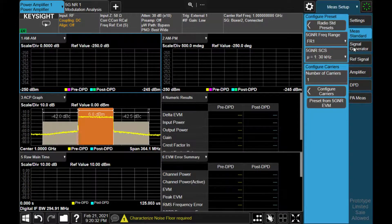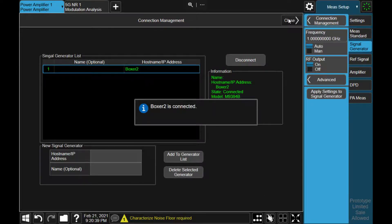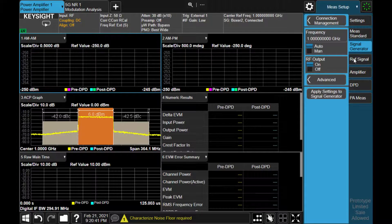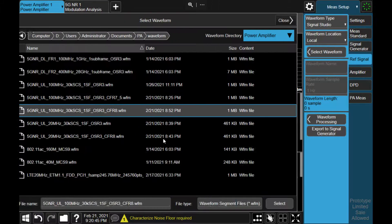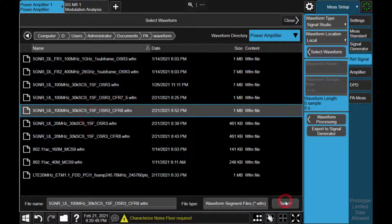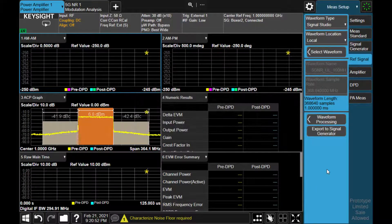Then next step is connect to the signal generator. So we have connected to the signal generator, and then select the waveform we just exported. So we select that one and then press select. This will transfer the waveform file to the VXG.